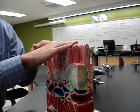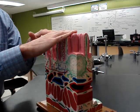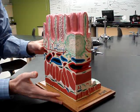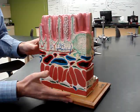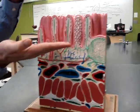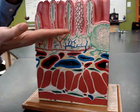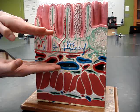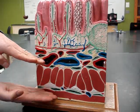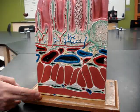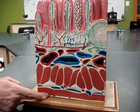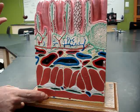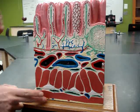That's why this is the deepest layer, and this is the most superficial layer. Looking at the layers we have: we have a mucosa, submucosa, muscularis, and then a serosa, adventitia, or visceral peritoneum.